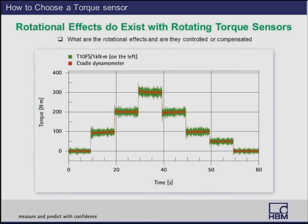Rotational effects do exist with rotating torque sensors. Unfortunately, they generally aren't listed on the data sheet because they vary depending on RPM and can vary from application to application, making them very hard to quantify. However, they exist on every torque sensor, and some companies compensate for rotational effects while others do not. It is important to ask your vendor what the rotational effects are and whether they are compensated for.